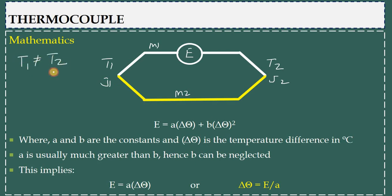In that case, the EMF E will be equal to a times delta theta plus b times delta theta square, where delta theta is the change in temperature, delta theta equals T1 minus T2. A and B here are constants. When the temperature difference is large, a is usually much greater than b compared to it, hence b can be neglected.